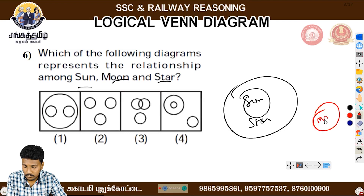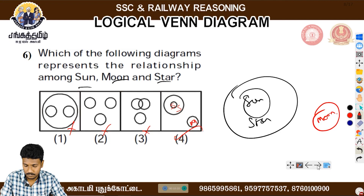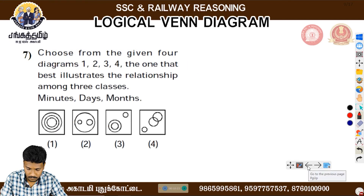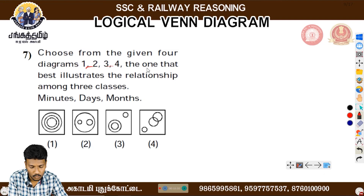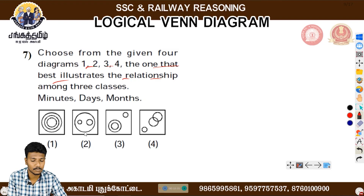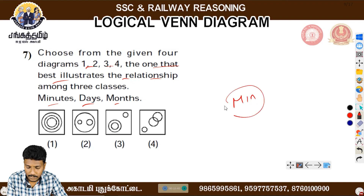Moon is different from stars. This is the best relationship between the three classes. Now look at minutes, day, and month.